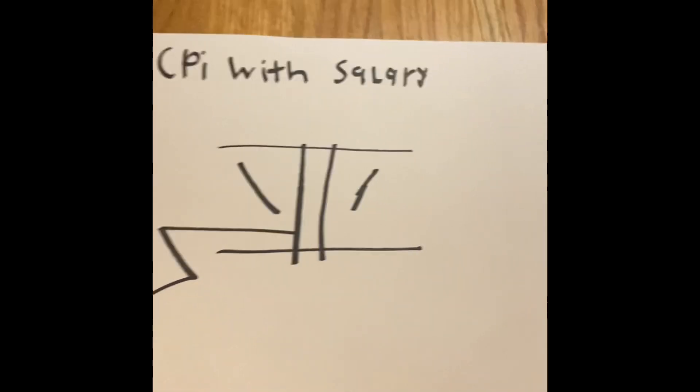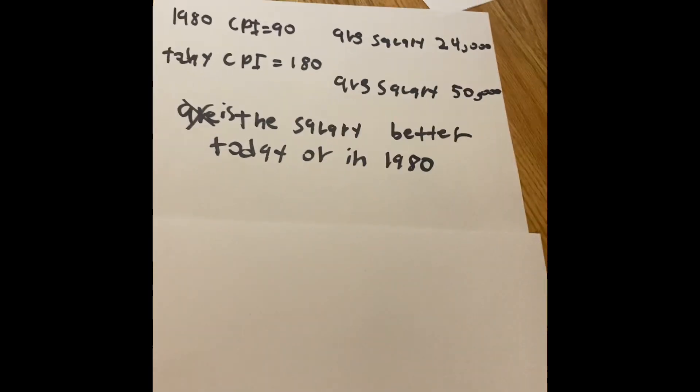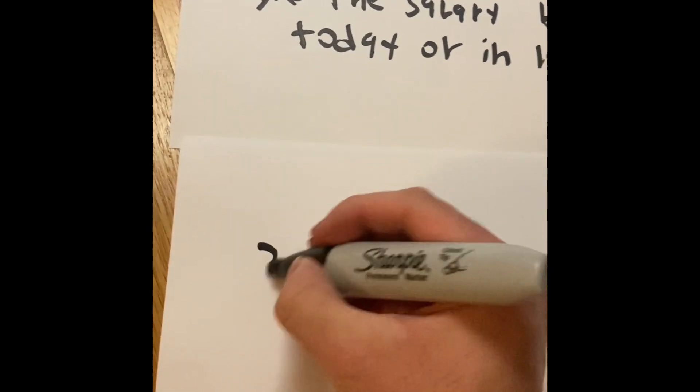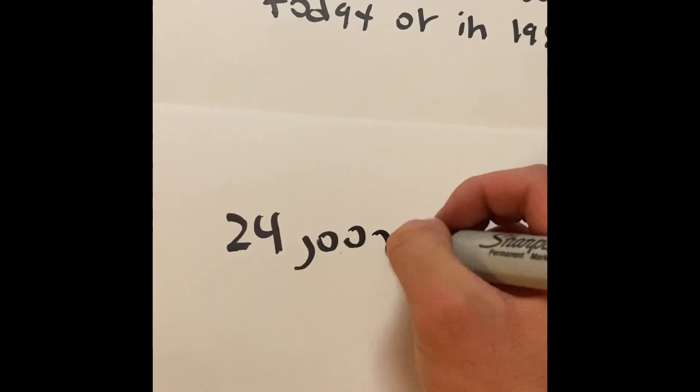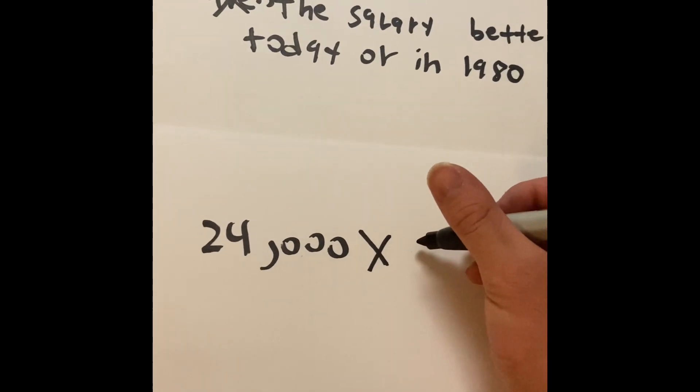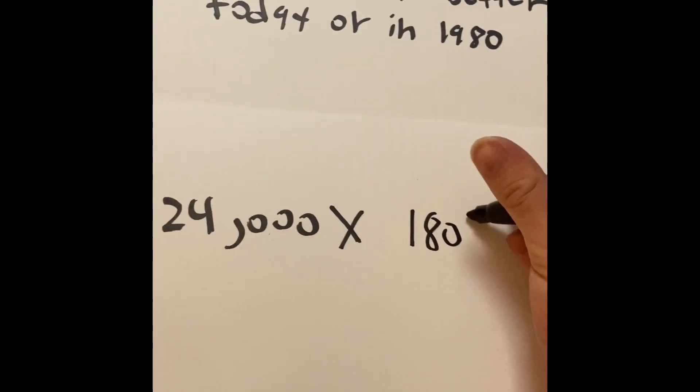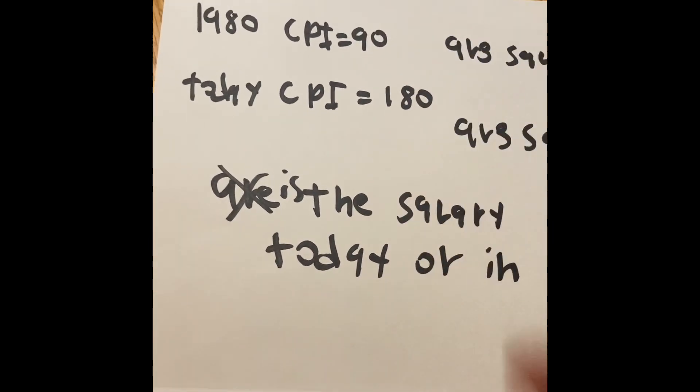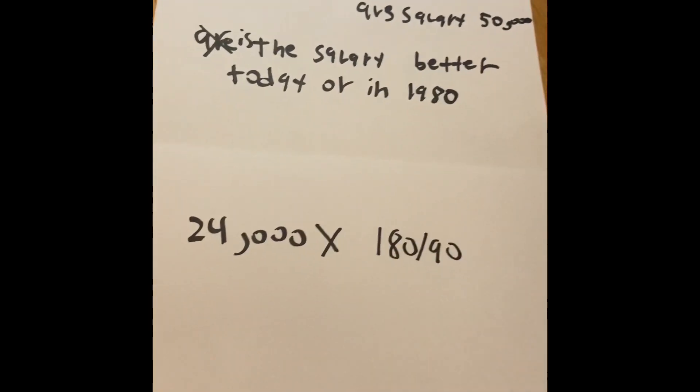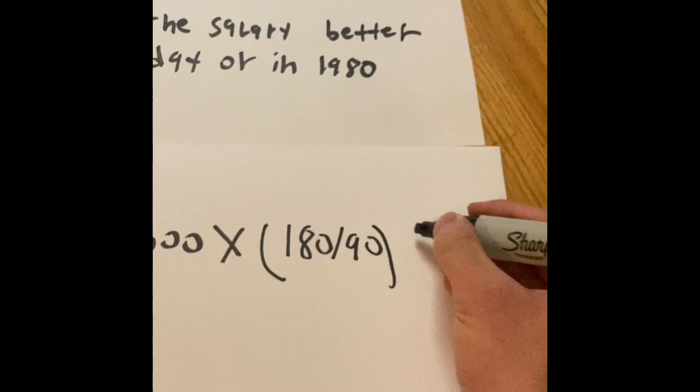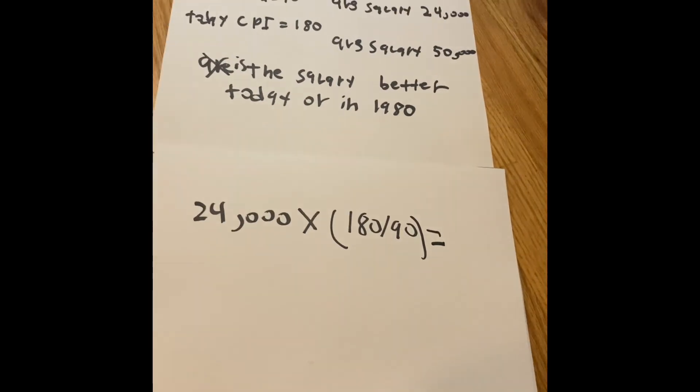So in order to do that, we're going to do a special kind of math. We have to convert 1980's salary and try to compare it with today. So what we're going to do is take $24,000 and we have to multiply that by, in parentheses, 180 divided by 90 because that is the CPIs for the different salaries.